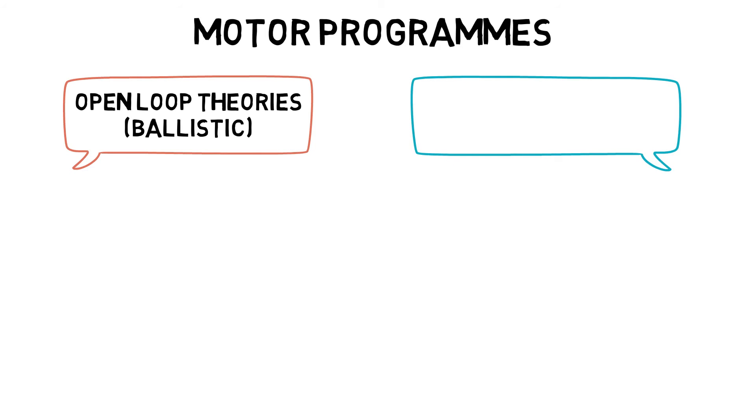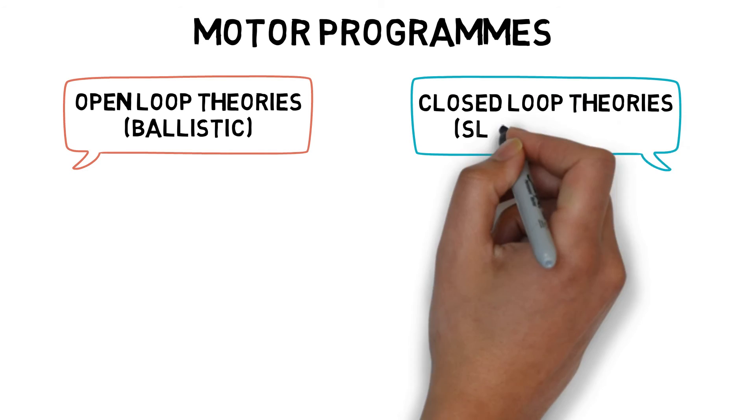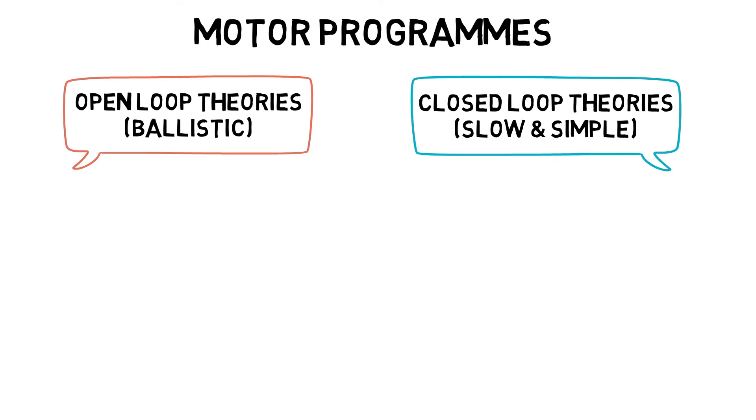Whereas closed-loop theories work for slow and simple movements that provide continuous intrinsic feedback, such as a snowboarder traveling down a slope.